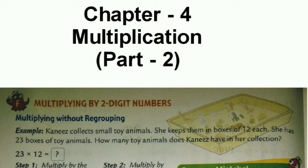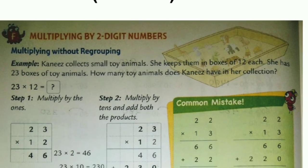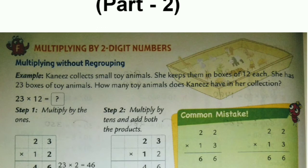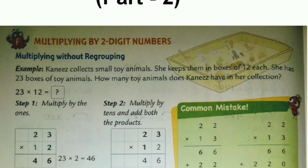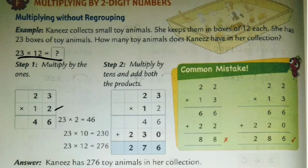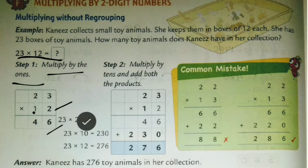See page number 82. The first method is multiplying without regrouping — it means no number will be carried forward; simple multiplication. For example, 23 multiplied by 12: first multiply by ones, then by tens — 3 twos are 6 and 2 twos are 4.